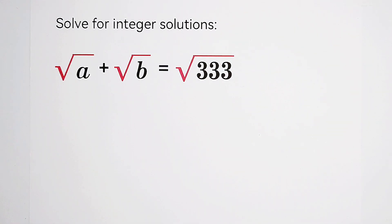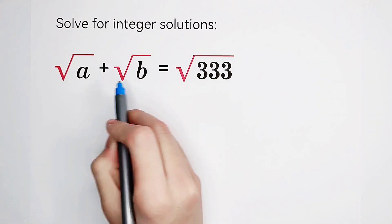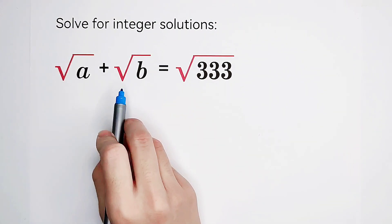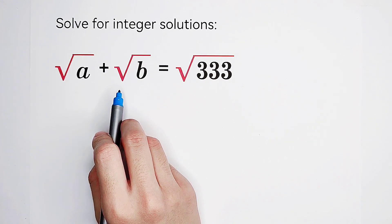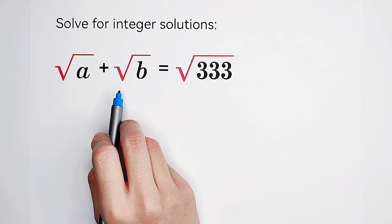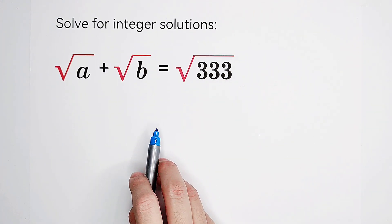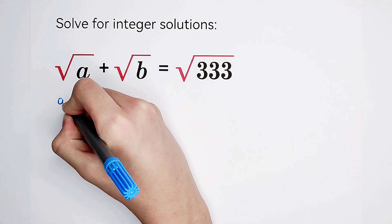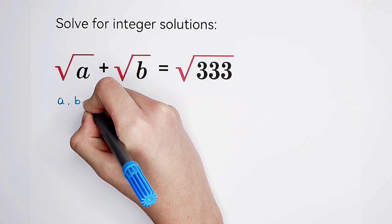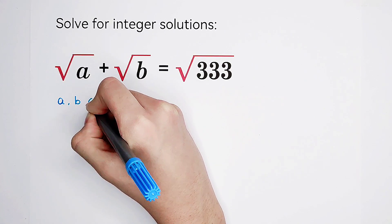Firstly, we should have noticed that a and b are under the square roots. So this means the numbers under square roots are always positive, or equal to 0. That means they are non-negative. So we can get a and b are non-negative, so they are natural numbers.